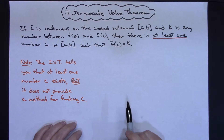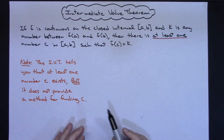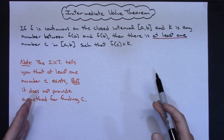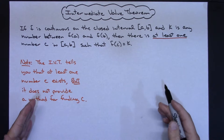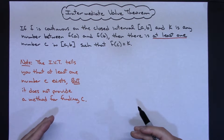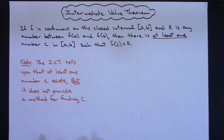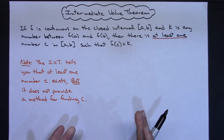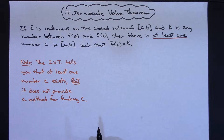In this video I'm going to take a look at the Intermediate Value Theorem. We're going to talk a little bit about the theorem and then work out a problem where we verify that the theorem holds and then actually find the value of C that's guaranteed by the theorem.